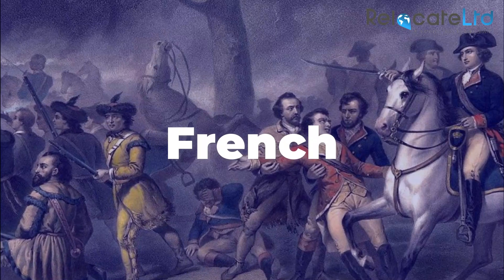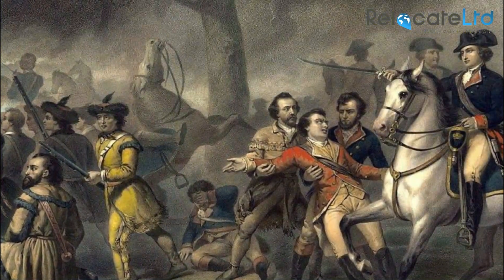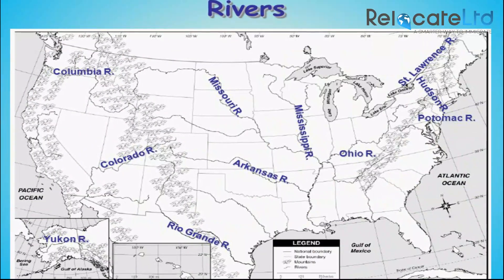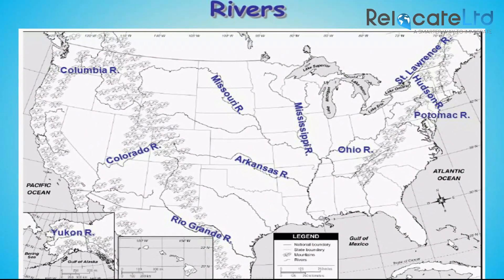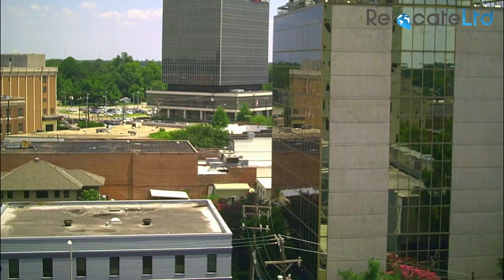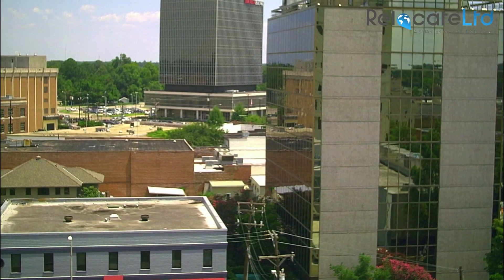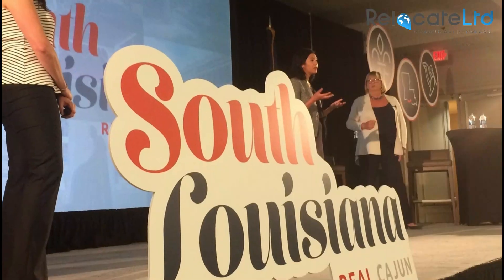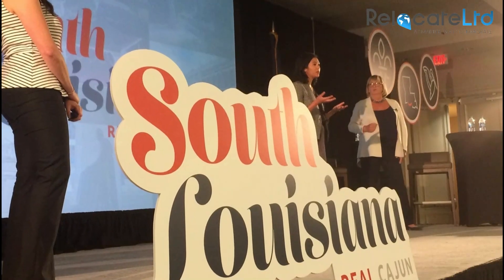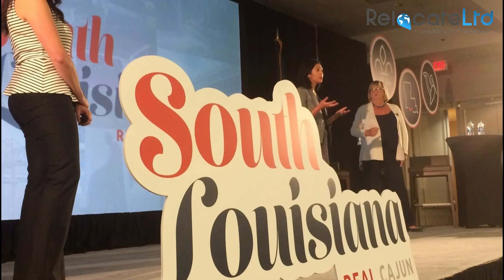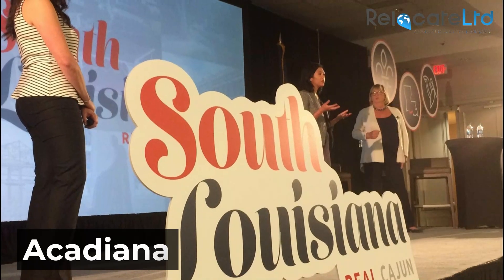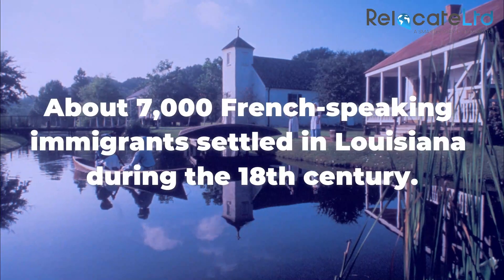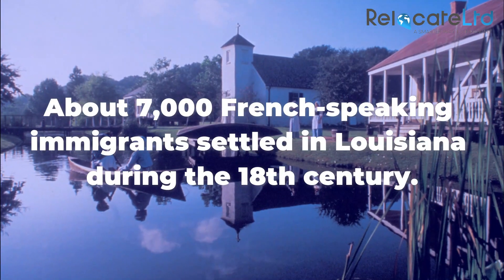French. In the late 17th century, French expeditions established a foothold on the St. Lawrence River, Mississippi River, and Gulf Coast. New Orleans expanded when several thousand French-speaking refugees from the region of Acadia made their way to Louisiana following British expulsion, settling largely in the southwest Louisiana region, now called Acadiana. About 7,000 French-speaking immigrants settled in Louisiana during the 18th century.